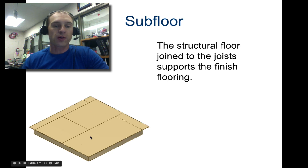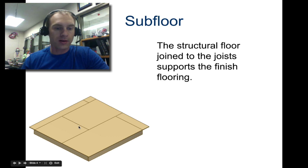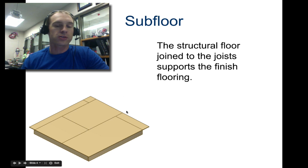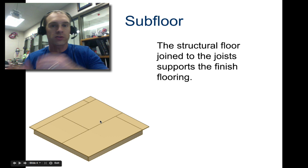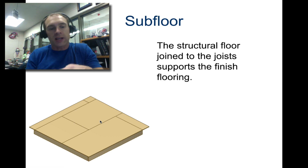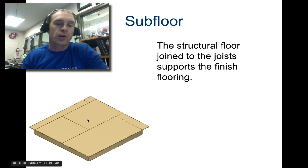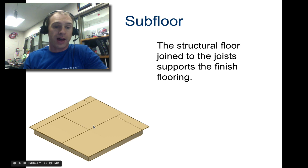Then comes the subfloor. Usually these are four-foot wide by eight-foot long sheets called OSB — oriented strand board — and that's just used to add extra support so that those floor joists can't tilt side to side. Obviously you need something to stand on, so then you put your wood floor, tile, or whatever right on top of that.